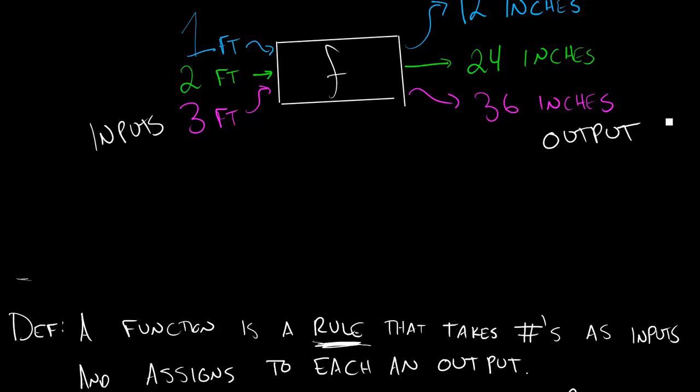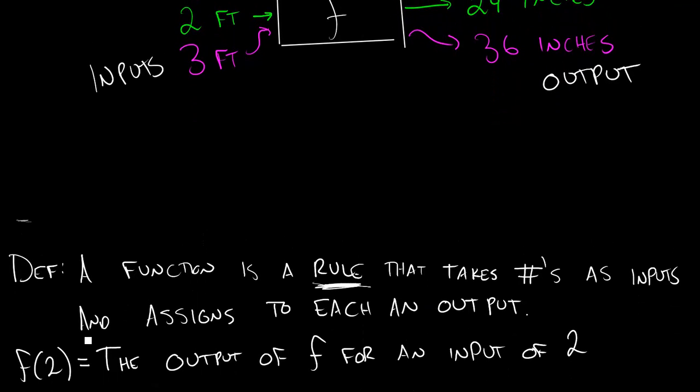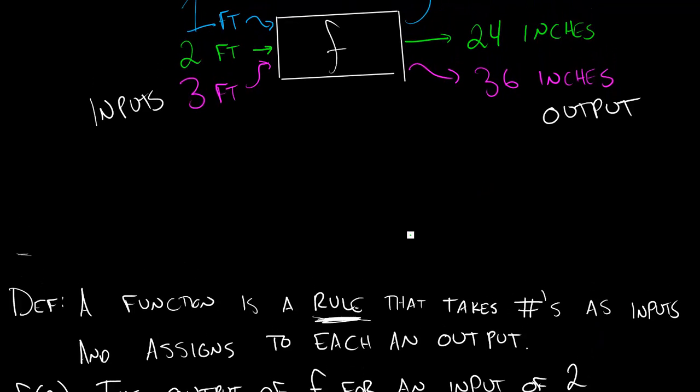And some important terminology for functions that will play a bigger role in the coming sections, or in this one especially, we're going to see this a lot, something like f of 2. And what I want you to think of when you see f of 2 is what we're looking for is the output of the function when it's fed an input of 2. So for our example, when we fed our function 2, take a look above, its output was 24 inches. So from that we would see that f of 2, in our example above, was 24.